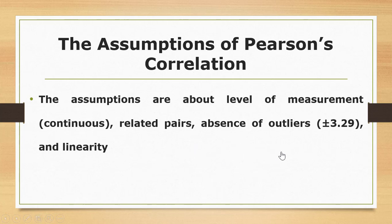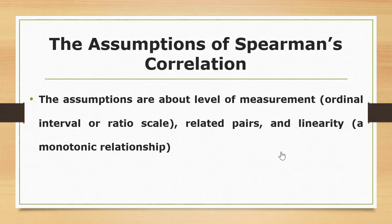For Spearman's correlation — the non-parametric version of Pearson's — note that Pearson begins with P and is parametric, while Spearman's is non-parametric. It is used when the assumptions of Pearson's correlation are violated. Its assumptions include ordinal, interval, or ratio level of measurement; related pairs; and a monotonic relationship between variables.